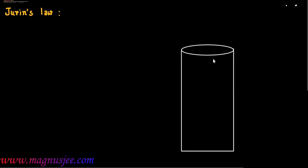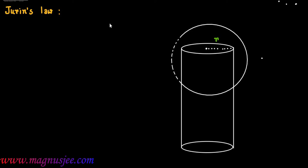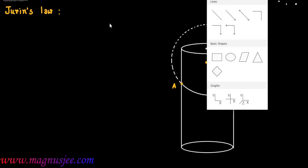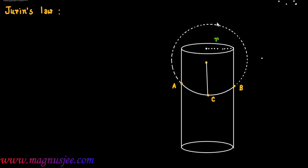Jurin's Law. We have to state Jurin's Law. This is a capillary tube. R is the radius of the capillary tube and we can consider the liquid meniscus of liquid in a capillary tube. This is the liquid meniscus, and this liquid meniscus or free surface of liquid in the capillary tube is a part of a sphere. AB is the free surface or liquid meniscus of the liquid column in the capillary tube, and we can draw the radius of curvature of the liquid meniscus ACB.